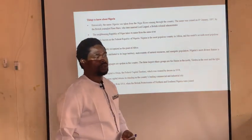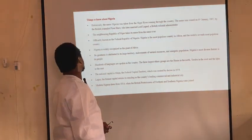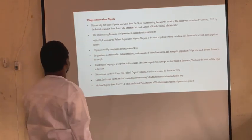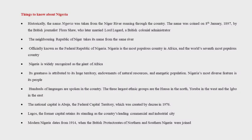What are we to know about Nigeria? Historically, the name Nigeria was taken from the Niger River running through the country. The name was coined on 8th January 1897 by British journalist Flora Shaw, who later married Lord Lugard, a British colonial administrator.